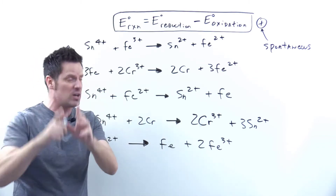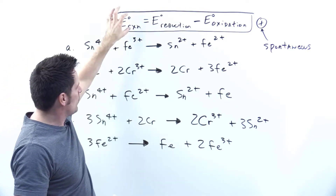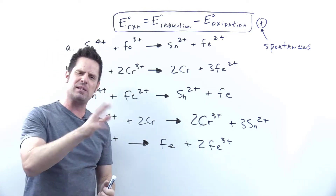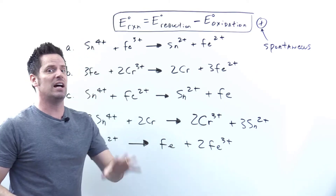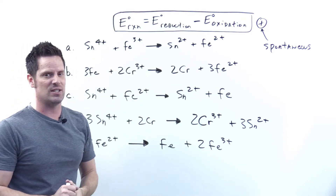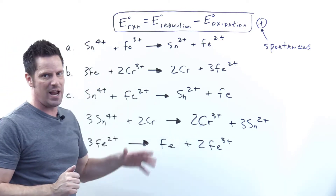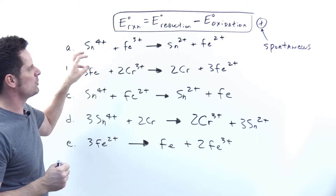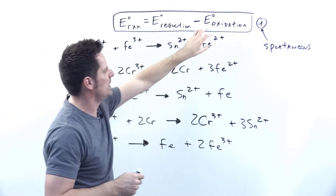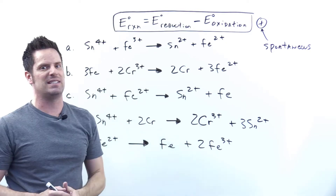Any time your overall E for the reaction is positive, that is a spontaneous reaction. It's the opposite of Delta G — they're inversely related sign-wise. Delta G negative is spontaneous; E positive is spontaneous. Identify what's getting oxidized and reduced, plug in the reduction potentials, and check if the answer is positive.